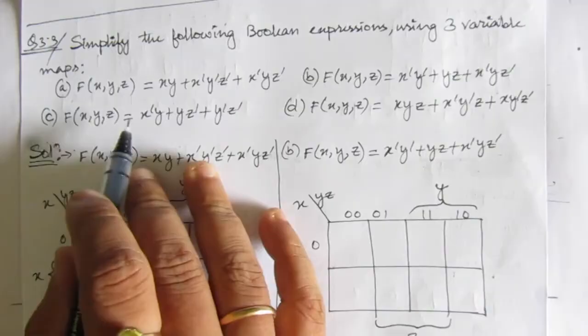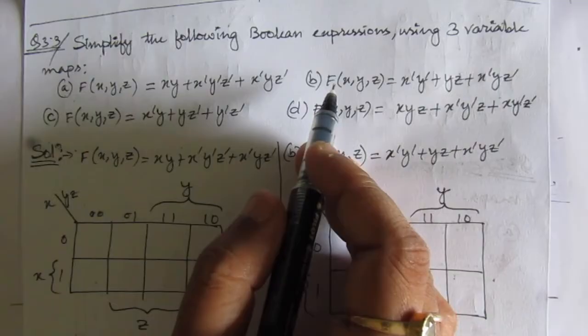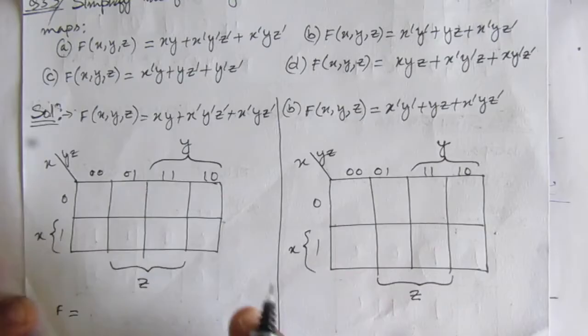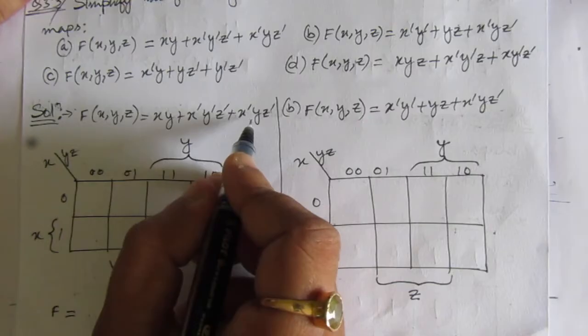We are given four Boolean expressions and we have to use three-variable maps to simplify or minimize these expressions. The first problem is: xy + x̄ȳz̄ + x̄yz̄. The second problem follows. I am separating them with a line here.